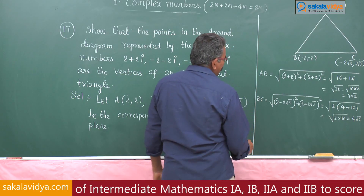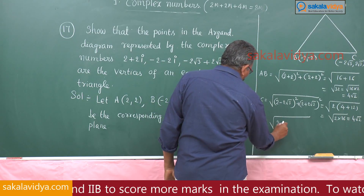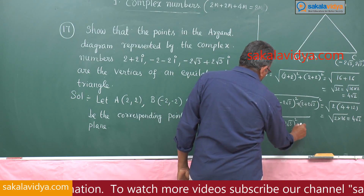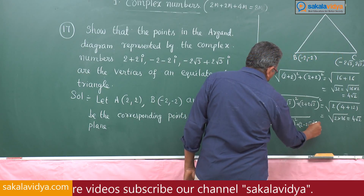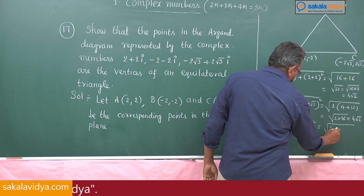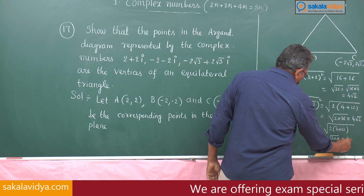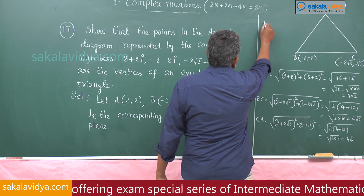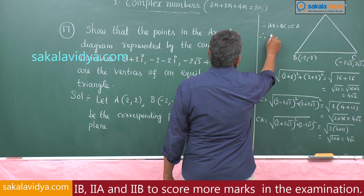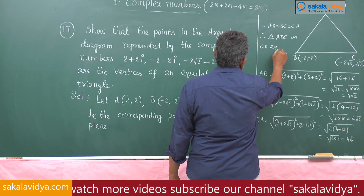Now find CA: CA = √((2+2√3)² + (2−2√3)²). This is the same form, giving √(2·(4+12)) = √(2·16) = 4√2. Therefore AB = BC = CA = 4√2, so triangle ABC is equilateral.